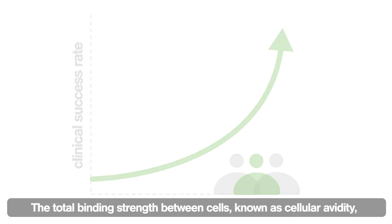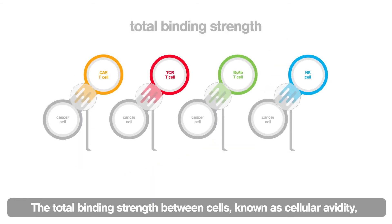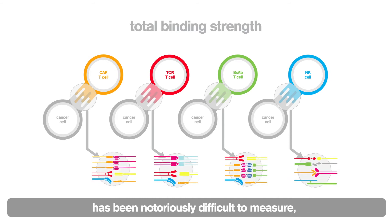The total binding strength between cells, known as cellular avidity, has been notoriously difficult to measure. Until now.